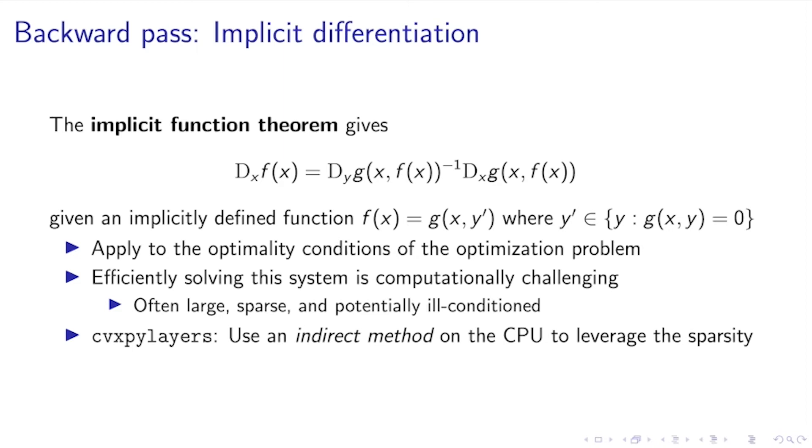One last interesting point to note in this space is that the system that comes up for implicit differentiation is also very similar to the linear system that a lot of solvers use in their forward pass. So one additional optimization to consider is that you might be able to reuse factorizations from the forward pass of the problem. In our setting, we're not doing this in the general setting of CVXPyLayers, but this is especially promising if you're hand implementing a specialized solver.